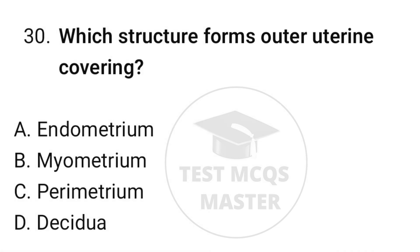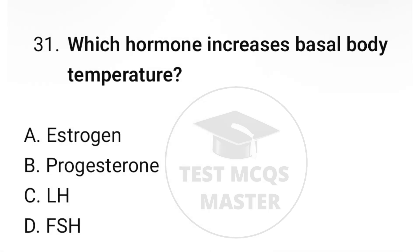Question number thirty: which structure forms the outer uterine covering? The correct option is C, perimetrium. Question number thirty-one: which hormone increases basal body temperature? The correct option is B, progesterone.